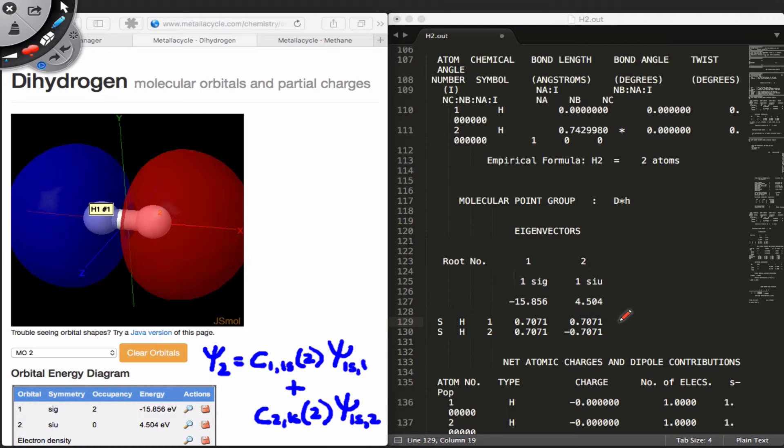The coefficient on hydrogen atom 1 is positive, but the coefficient on hydrogen atom 2 is negative. This means that near the center of the molecular orbital, where the atomic orbitals overlap, there's a cancellation of the orbital density.